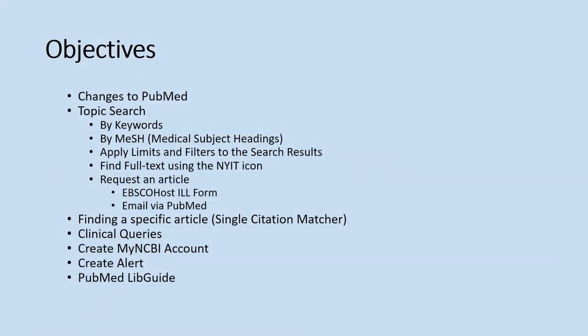In this tutorial, the objectives are to show you the changes to the new PubMed, how to do a topic search by keyword, by medical subject headings, how to apply limits and filters to the search results, how to find full text using the NYIT icon, how to request an article through the EBSCOhost ILL form or using email via PubMed, how to find a specific article using the single citation matcher, how to do a clinical queries search, how to create a My NCBI account, how to create alerts, and how to use the PubMed LibGuide.